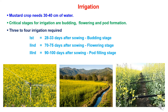Regarding irrigation: mustard is a rabi crop with less water requirement during the crop period. During crop duration, 30 to 40 cm of water is needed. The critical irrigation stages for mustard are budding (28–33 days after sowing), flowering (70–75 days after sowing), and pod filling (90–100 days after sowing). There should be no shortage of irrigation water at these three critical stages, otherwise there will be significant impact on yielding.